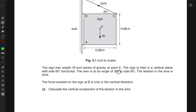The sign has weight W and center of gravity at point E. The sign is held in a vertical plane with side BC horizontal. The wire is at an angle of 35 degrees to the side BC. The tension in the wire is 54 newtons. The force exerted on the sign at B is only in vertical direction. Calculate the vertical component of the tension in the wire.